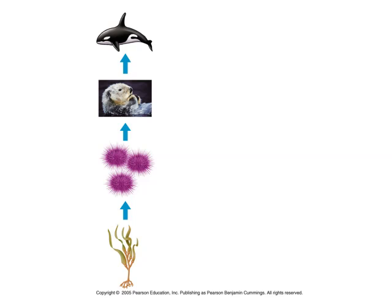Here's a basic food web: kelp, sea urchin, sea otter, and the orca at the top. We naturally think the orca is going to be the keystone species. But really in this case, the otter is more of a keystone species because the orca will eat different things. If you get rid of that otter, the sea urchins will go crazy and devour your kelp.